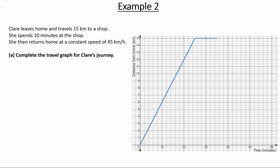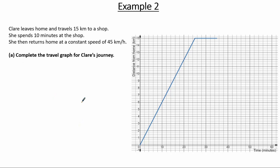Here is example two. Claire leaves home and travels 15 kilometers to a shop. She spends 10 minutes at the shop, then returns home at a constant speed of 45 kilometers per hour. In part A, we need to complete the travel graph for Claire's journey. To do that, we first need to interpret the stages of the travel graph we are given.